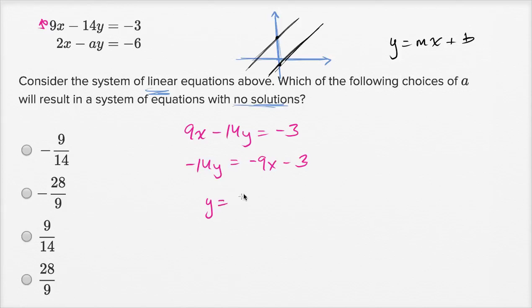I'm going to get y is equal to negative 9 divided by negative 14 is positive 9 over 14x and then plus 3 over 14.